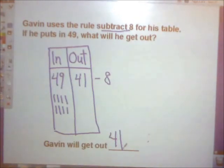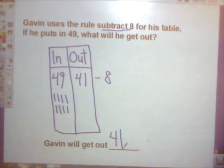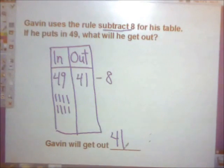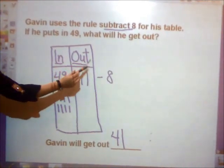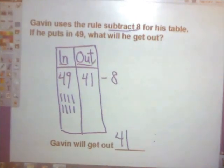All right, friends. Remember, when doing input-output tables, you need to find the rule. Always put a number in in order to get a number out. Keep practicing!